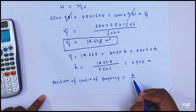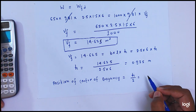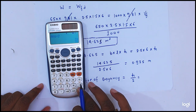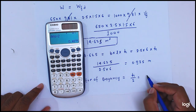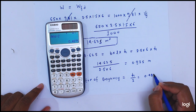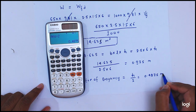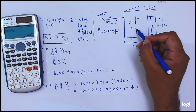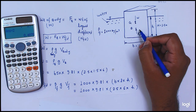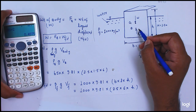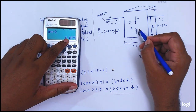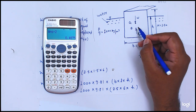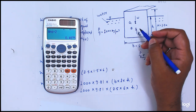The position of the center of buoyancy equals h by 2, so it is 0.975 divided by 2, which equals 0.4875 meter. This means point B, the center of buoyancy, is at 0.4875 meter from the base. The submerged height h is equal to 0.975 meter.